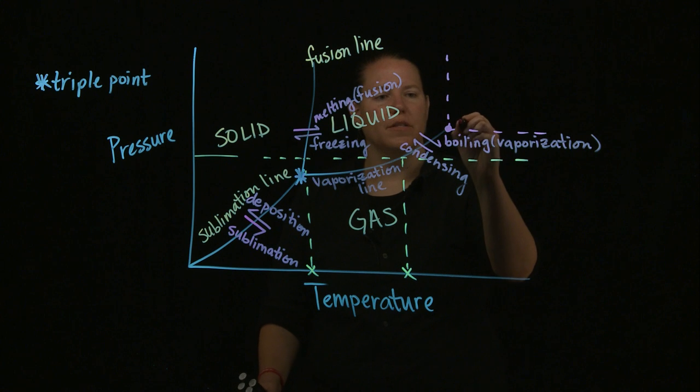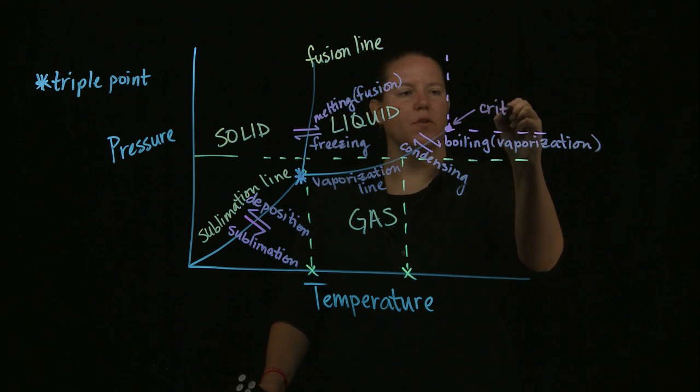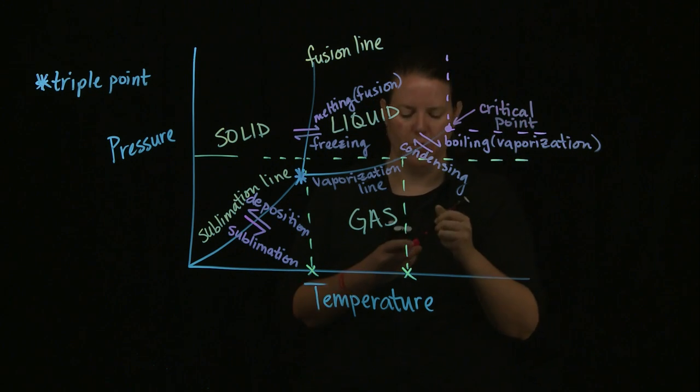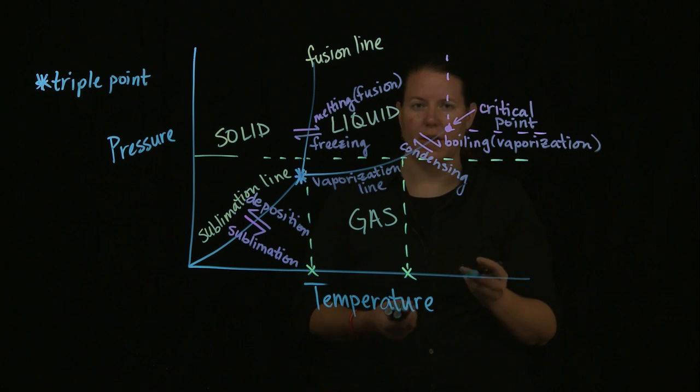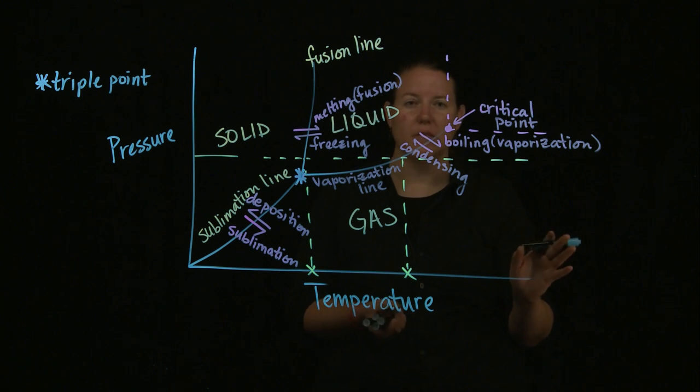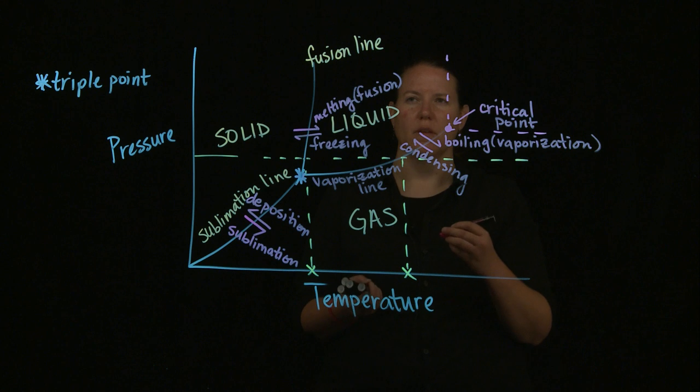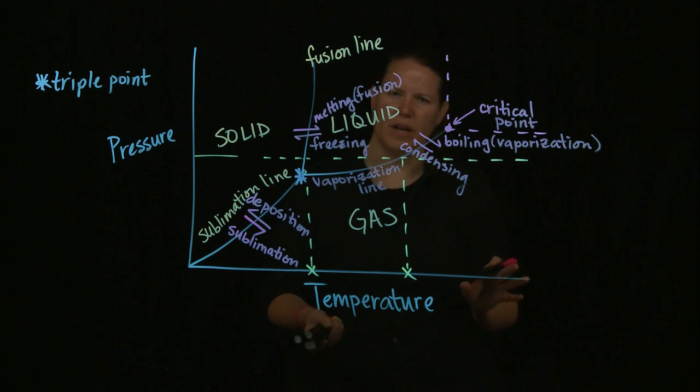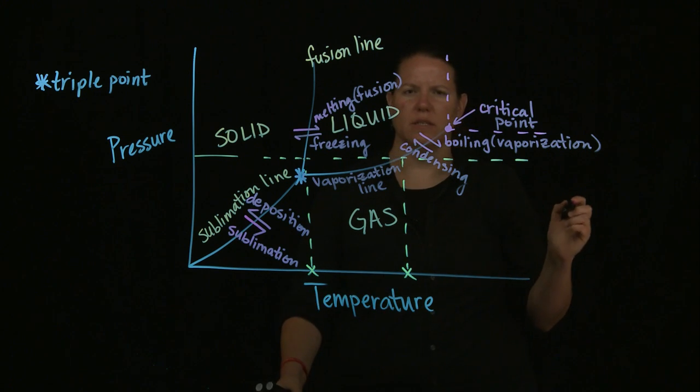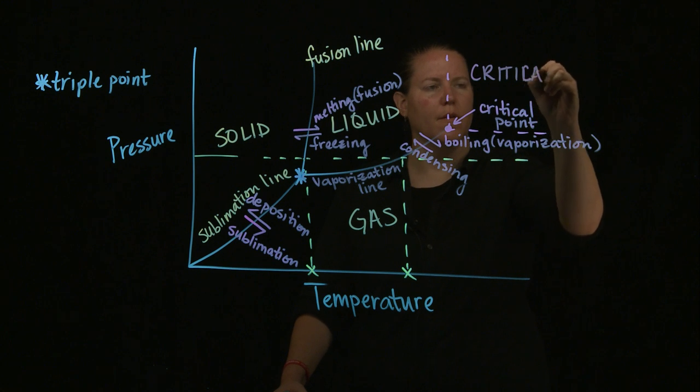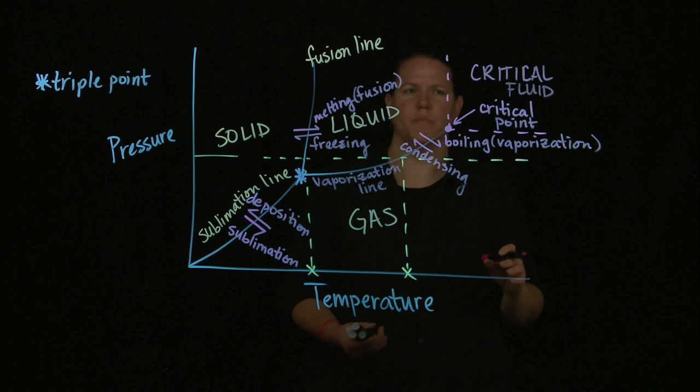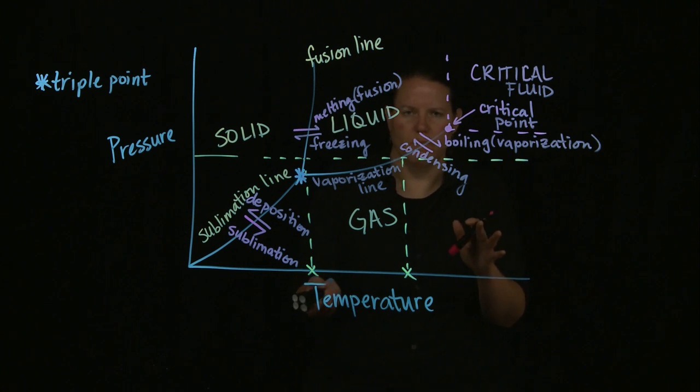That point right there is called the critical point. And after the critical point, you have a new kind of phase. This phase is kind of both a liquid and a gas. We probably think of it as something close to plasma - that idea. It has liquid and gas properties. But basically, this is a critical fluid. That's what we call it. Its properties have a lot of pieces in common with gaseous plasma here.